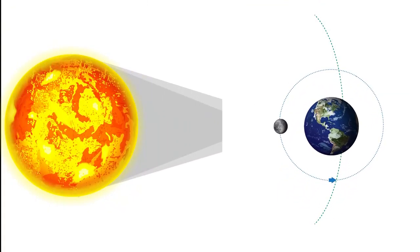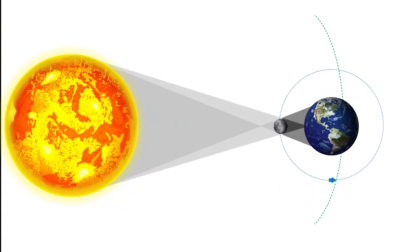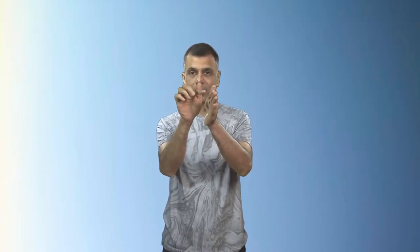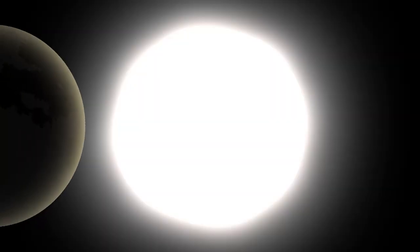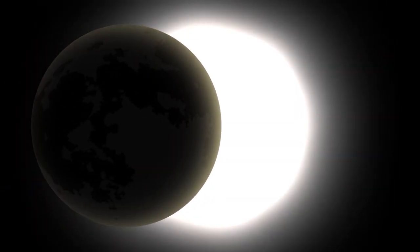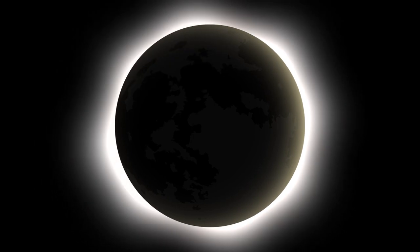This happens because even though the moon is smaller than the earth, and of course much much smaller than the sun, the angular diameter of the moon is exactly the same as the angular diameter of the sun. Even though the moon is much smaller, it's much closer, so the angle it subtends to an observer on earth is exactly the same as that of the sun. So when there's a fortuitous alignment, the moon can actually block the face of the sun.